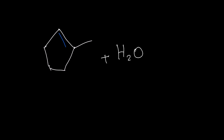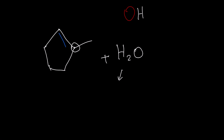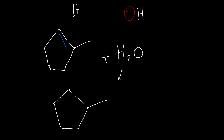Let's do another hydrolysis reaction with a ring this time. In this situation, the OH portion of the water is going to go on this carbon because this carbon has no hydrogens, and the hydrogen portion of the water is going to go on this carbon because it has one hydrogen attached to it. So your final answer would look like this.